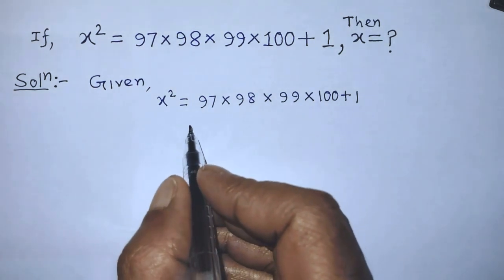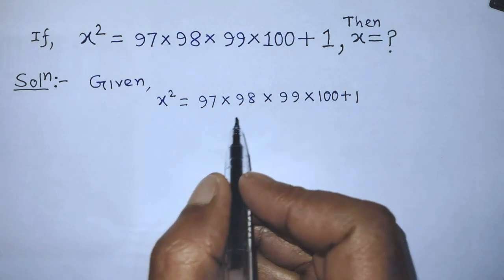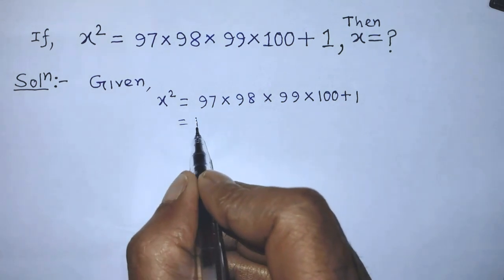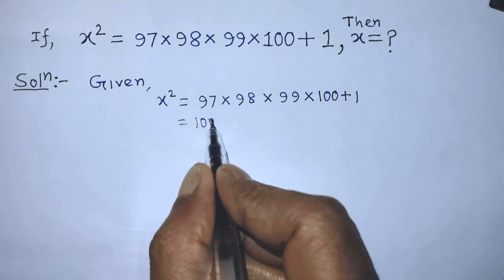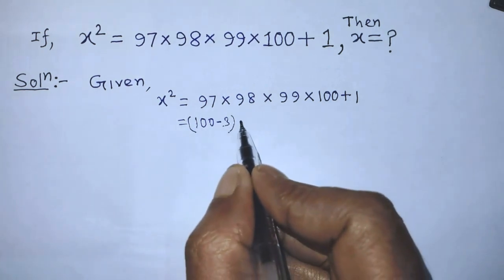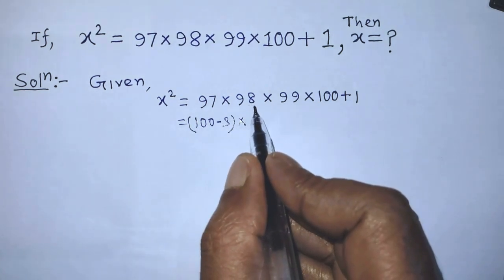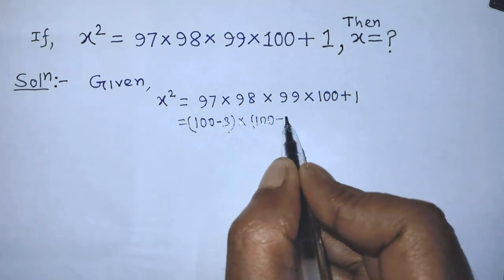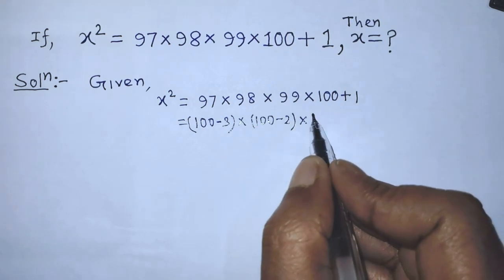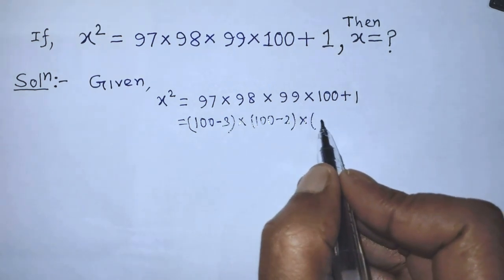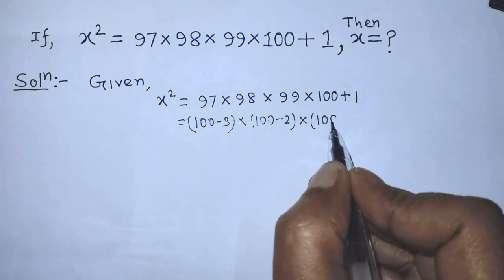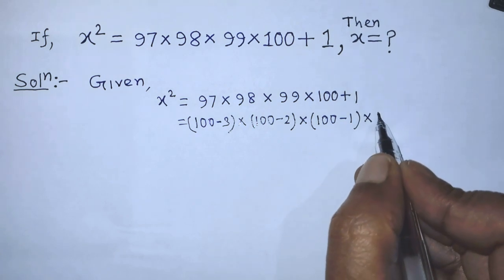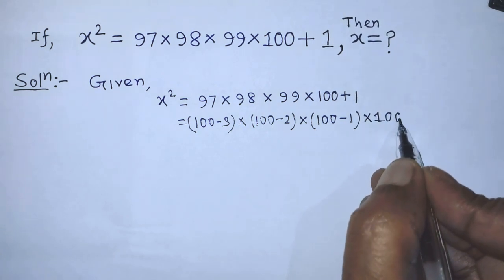To find the value of x from this equation, in the place of 97 we take (100 minus 3), in the place of 98 we take (100 minus 2), in the place of 99 we take (100 minus 1), and the last term we take as 100.